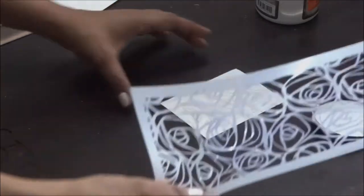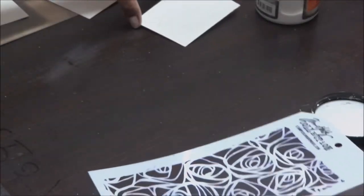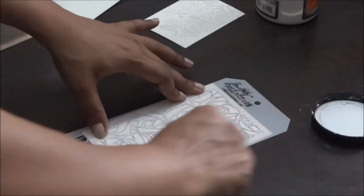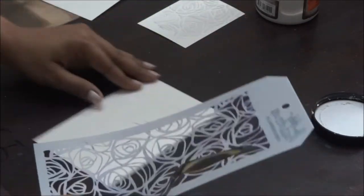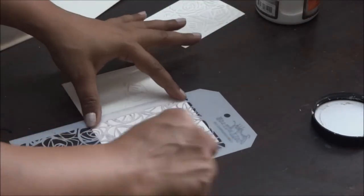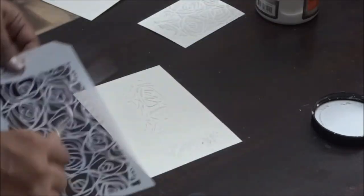You can use them with texture paste or color, see how beautiful it looks. A quick tip: you can use the remaining texture paste on leftover cardstock or any piece of paper, and then later when it dries up you can use it for your mixed media projects or canvases.